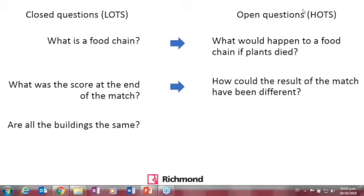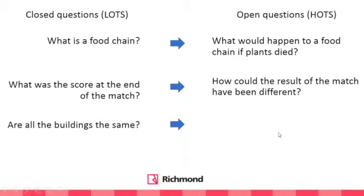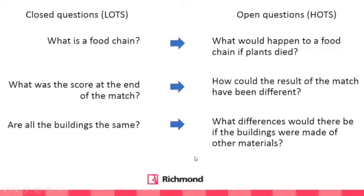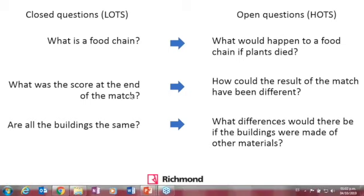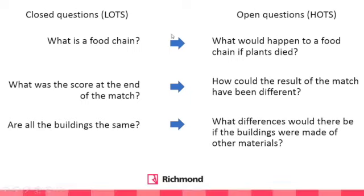Another example: 'What was the score at the end of the match?' is closed; 'How could the result of the match have been different?' is open. Or: 'Are all the buildings the same?' is closed; 'What difference would there be if the buildings were made of other materials?' is open. You can actually make both types of questions — one that checks if students remember, and one that makes them think beyond.